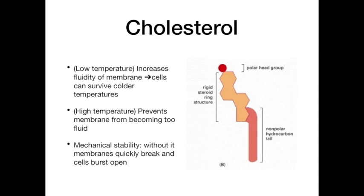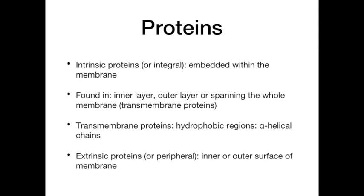Cholesterol is much less common in plant cell membranes and absent from prokaryotes, where similar compounds serve the same function. At low temperatures, cholesterol increases membrane fluidity by preventing close packing of the phospholipid tails, so cells can survive cold temperatures. At higher temperatures, cholesterol stabilizes the membrane when it could otherwise become too fluid. Cholesterol is also important for mechanical stability — without it, membranes break and cells burst open. The hydrophobic regions of cholesterol also help prevent ions or polar molecules from passing through the membrane.